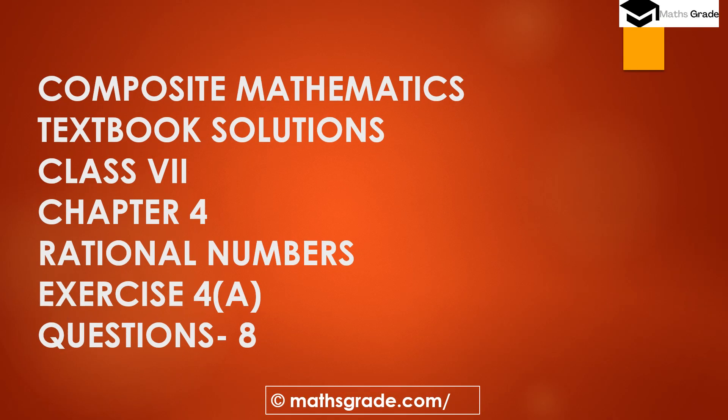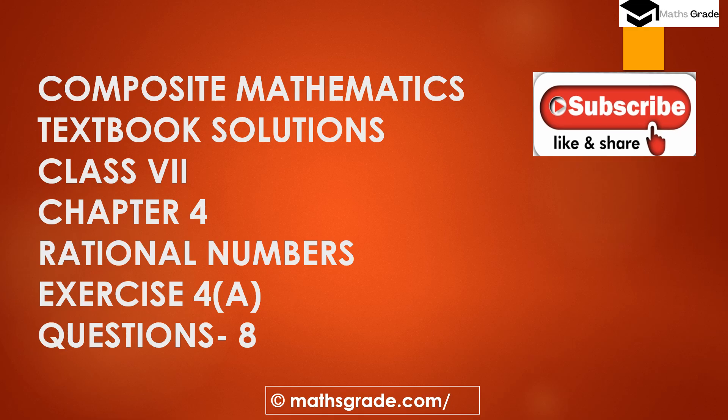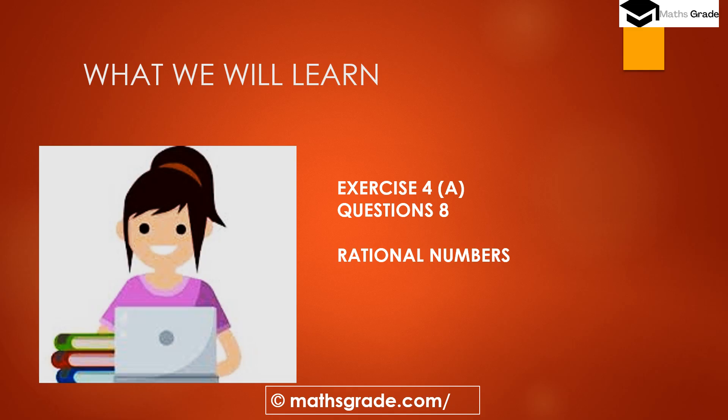Hello everyone, today we are going to learn and solve exercise questions 1 to 18, exercise 4A, chapter 4. The chapter name is Rational Numbers of class 7th of the Composite Mathematics textbook. If you have not subscribed to my YouTube channel, please subscribe and hit the bell icon for notifications. Please visit my blog massgrade.com for more information regarding textbook solutions for CBSC, ICSC, and other state boards. Let's get started.